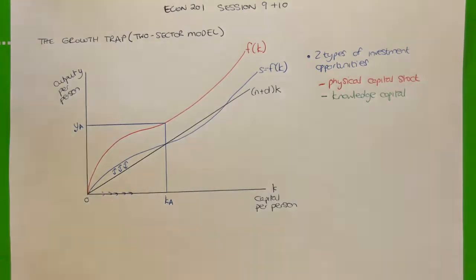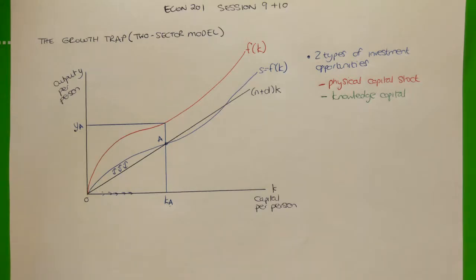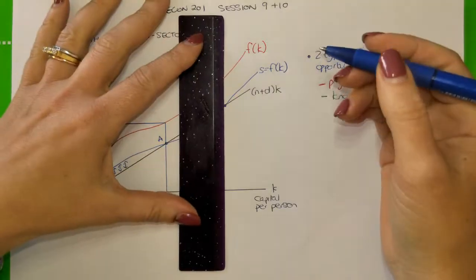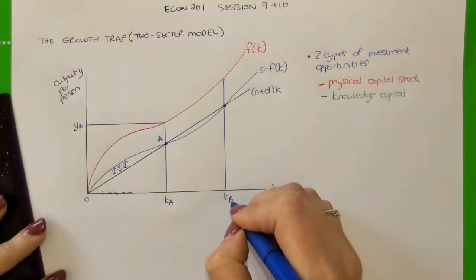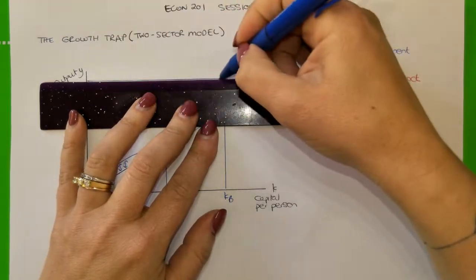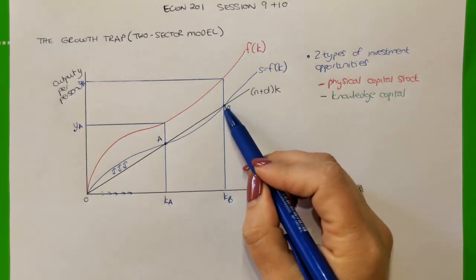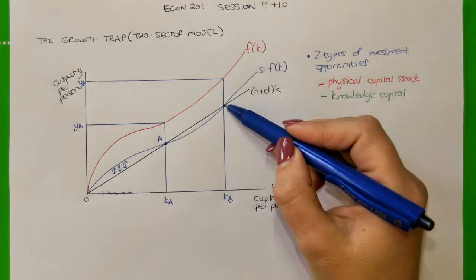We call that steady state equilibrium A. A steady state equilibrium is where capital stock per person and output per person will no longer change. The next steady state equilibrium is where savings per person and investment per person are once again equal to each other — we call that K-B — and we can mark off the corresponding level of output per person. This is again a steady state equilibrium where output per person will not change.